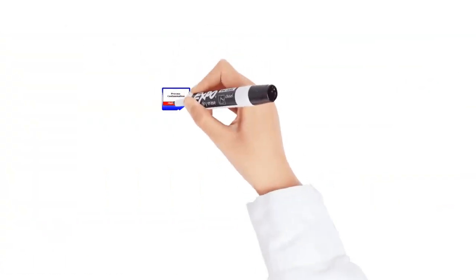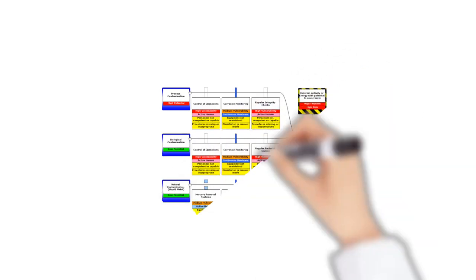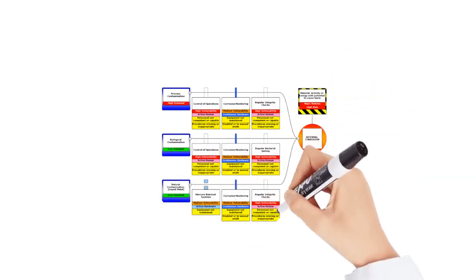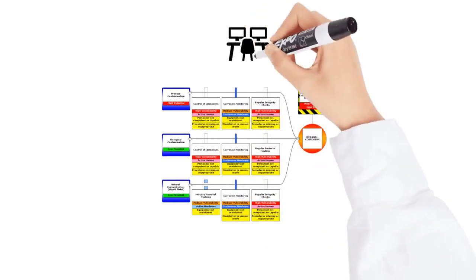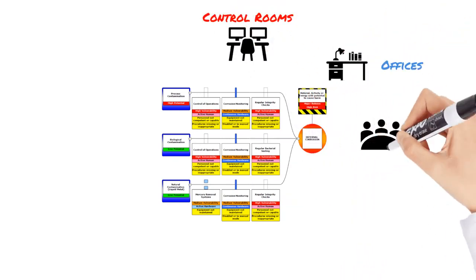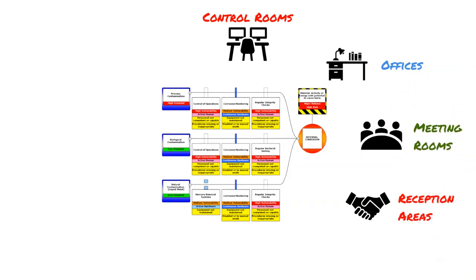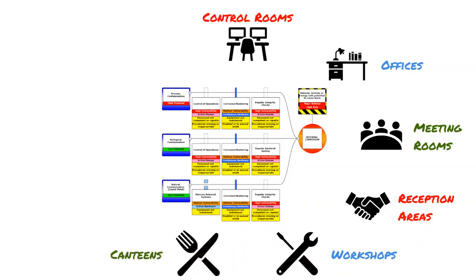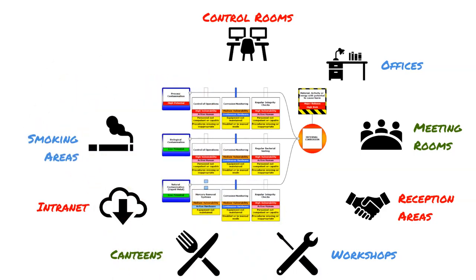Process safety scenarios or bow ties can be deployed digitally or physically in a number of prominent locations or areas where people congregate: control rooms, offices, meeting rooms, reception areas, workshops, canteens or restaurants, on your intranet or portal, in smoking areas, or at places of work. Bow tie scenarios can be rotated on a campaign basis to ensure a fresh view across a wide range of topics.